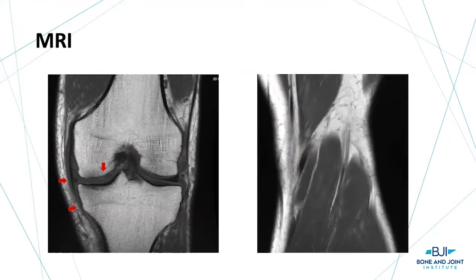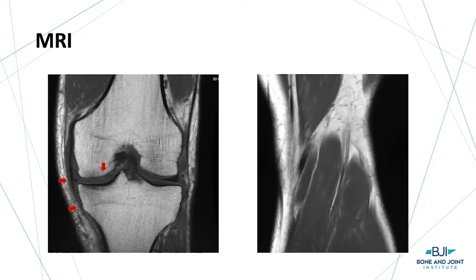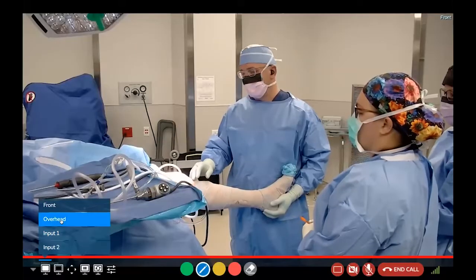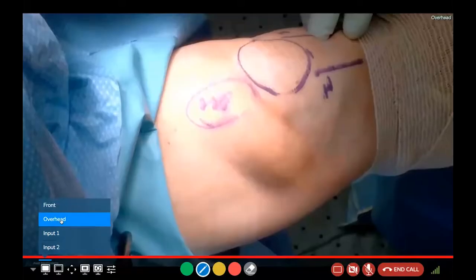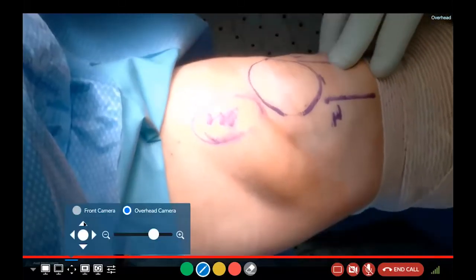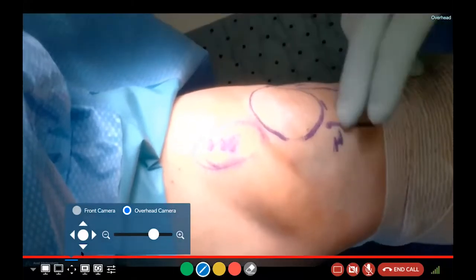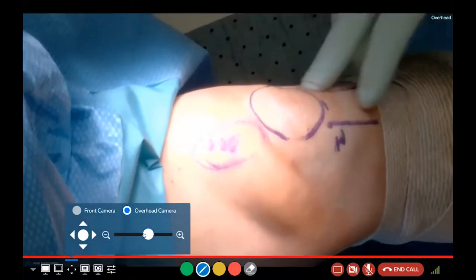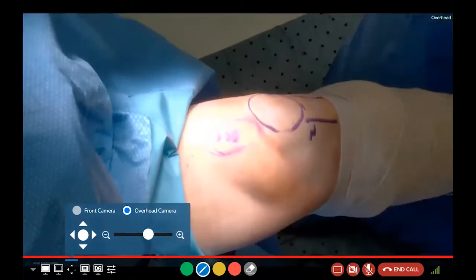Let's go into the procedure now. I've marked out the kneecap and the patellar tendon. Knee arthroscopy is really performed going on either side of the patellar tendon underneath the patella. That's how we'll access the joint.